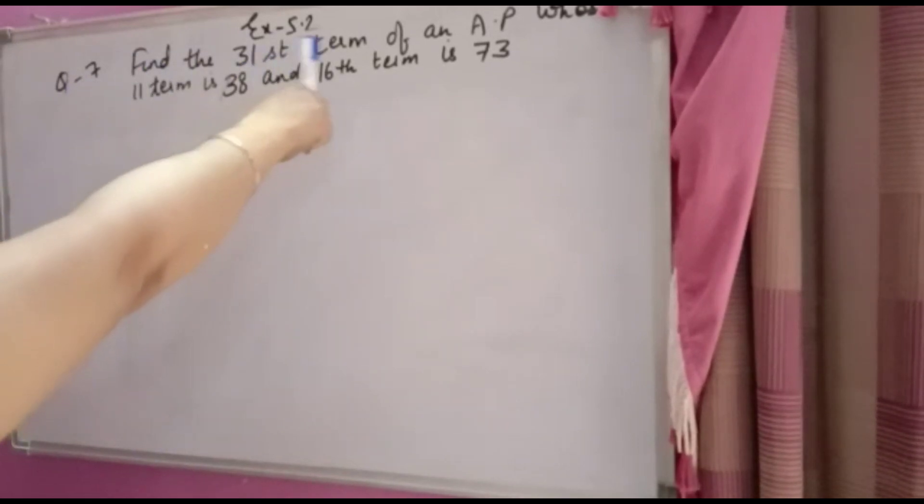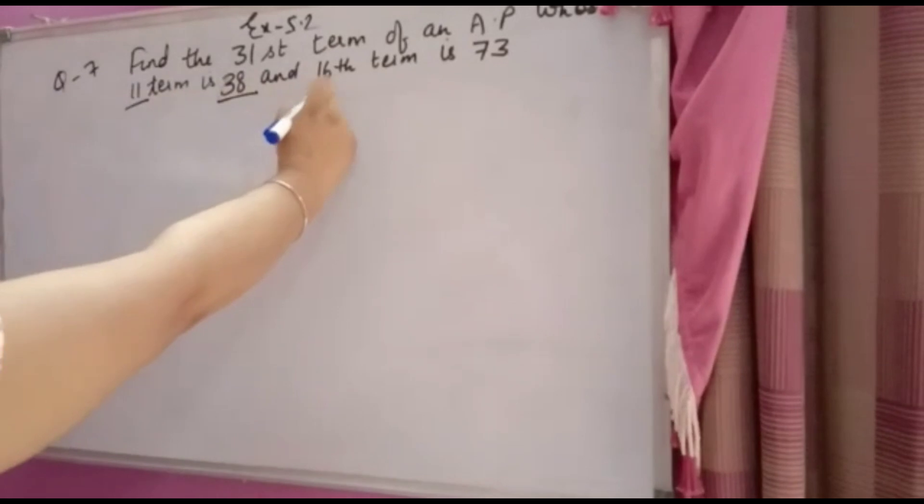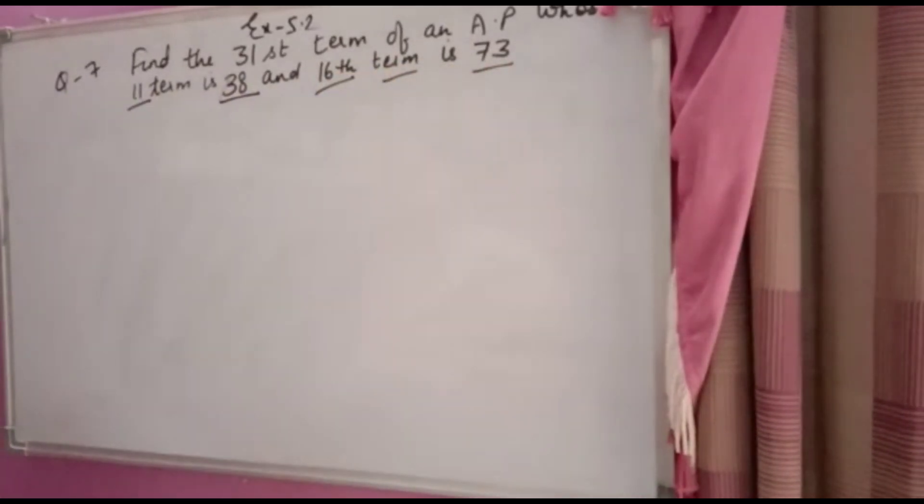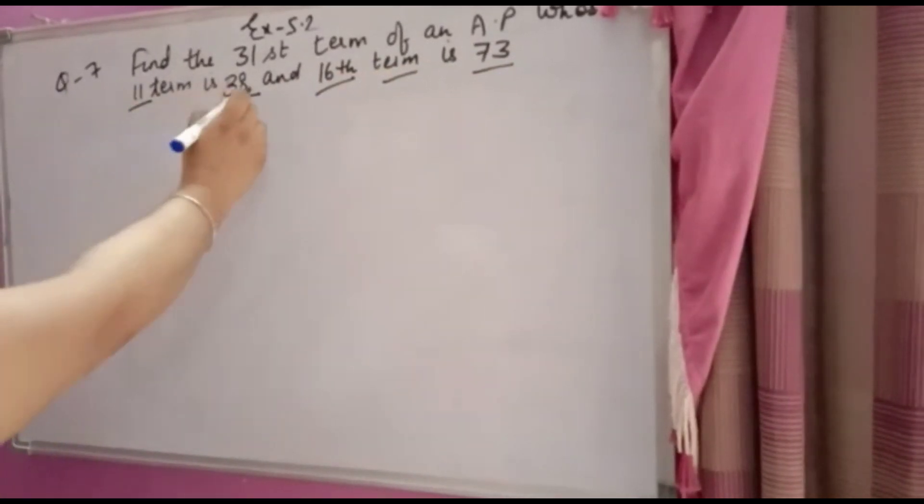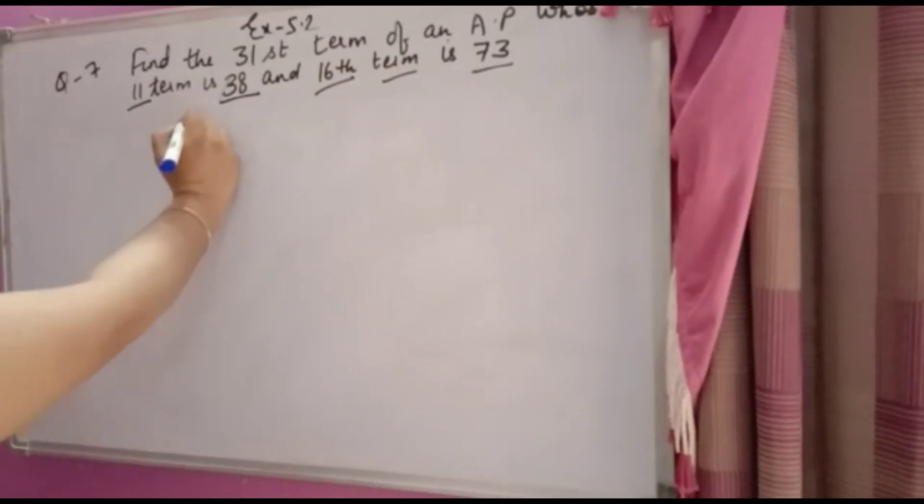Question number 7: Find the 31st term of an AP whose 11th term is 38 and 16th term is 73.